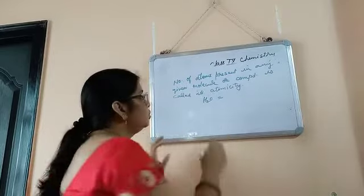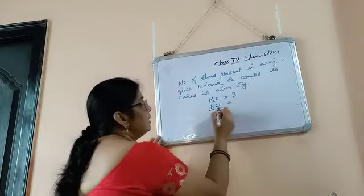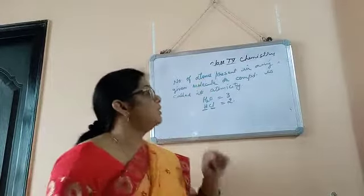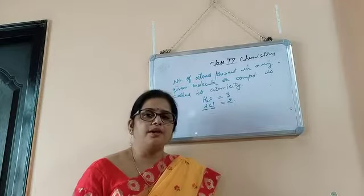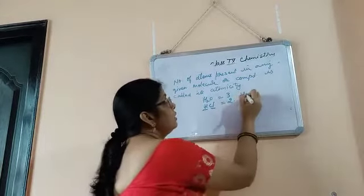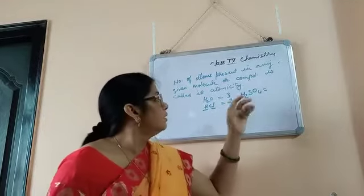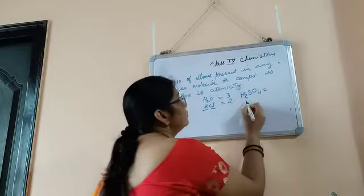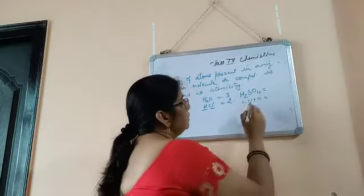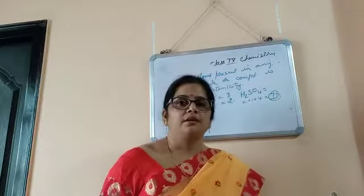For example, atomicity of HCl: H is 1 and Cl is 1, so atomicity is 2. Let's take another example: H2SO4. H is 2, sulfur is 1, and oxygen is 4 — so the atomicity of H2SO4 is 7.